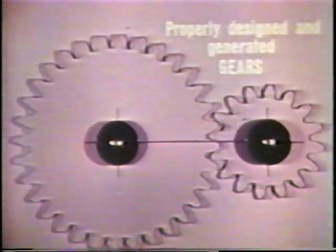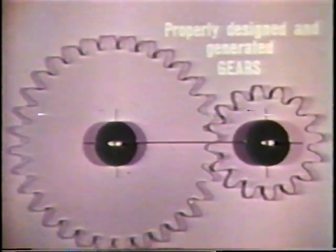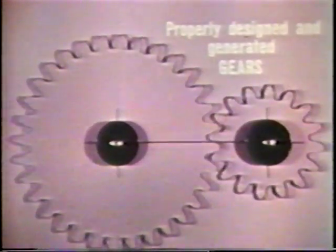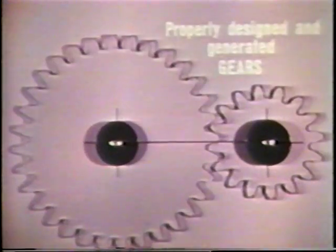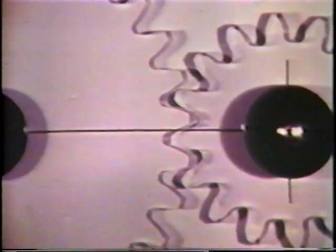Experience has proven that properly designed and generated gears present the best method of transmitting uniform angular motion. It must be realized, however, that the shape of the gear teeth is a very important factor in the smoothness of the transmitted motion. Because of its many valuable properties, the involute is the most practical tooth shape for transmitting smooth and uniform angular motion.